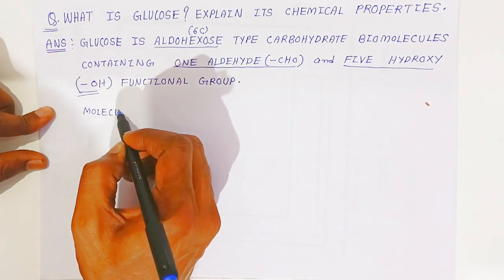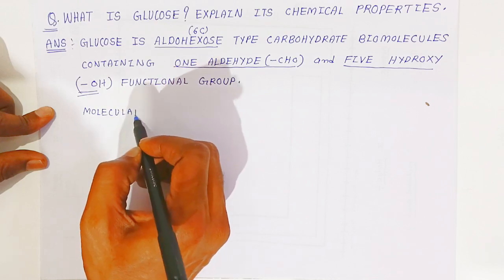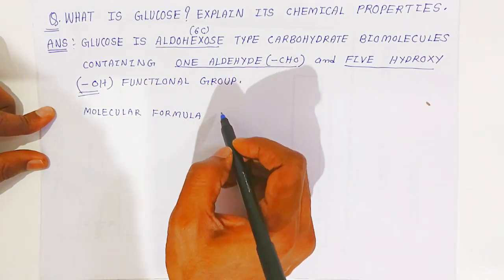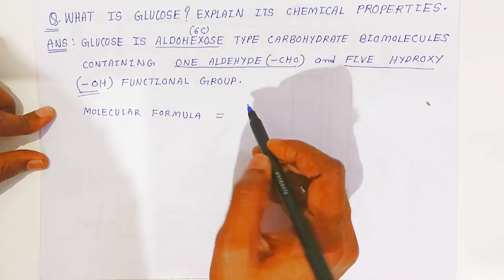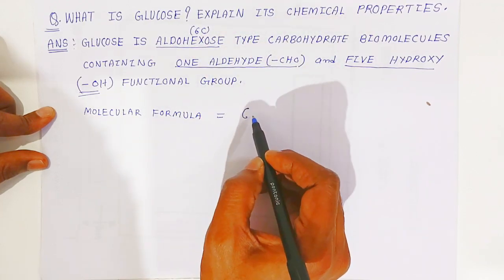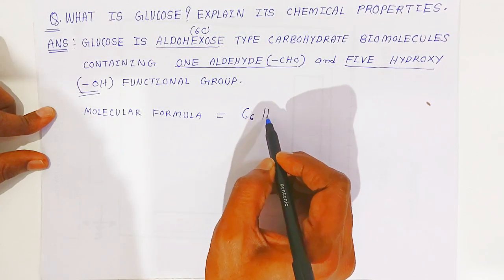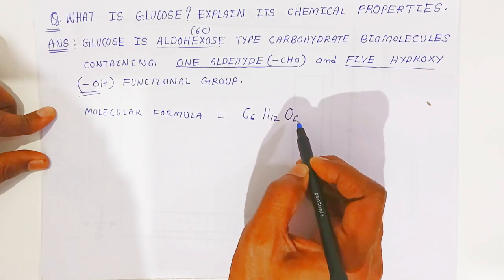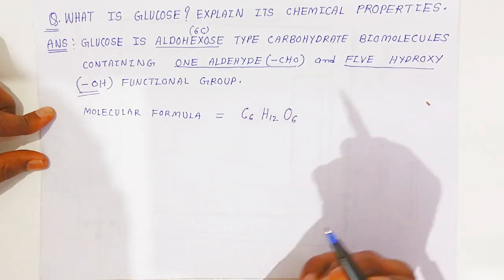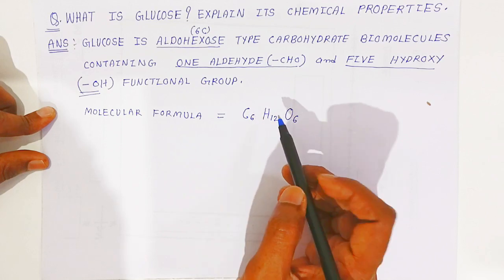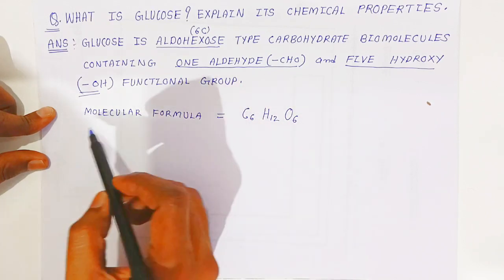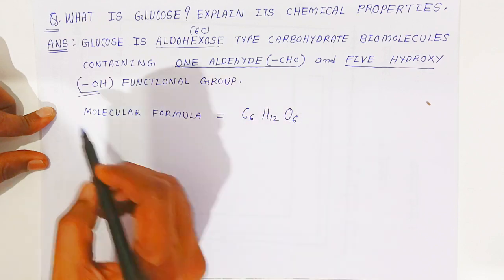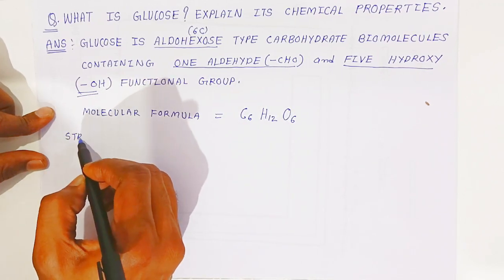The molecular formula of glucose: because it is an aldohexose, it starts with C6. Hydrogen will always be double, so H12, and oxygen will be the same as carbon, so O6. This gives us the molecular formula of glucose as C6H12O6.